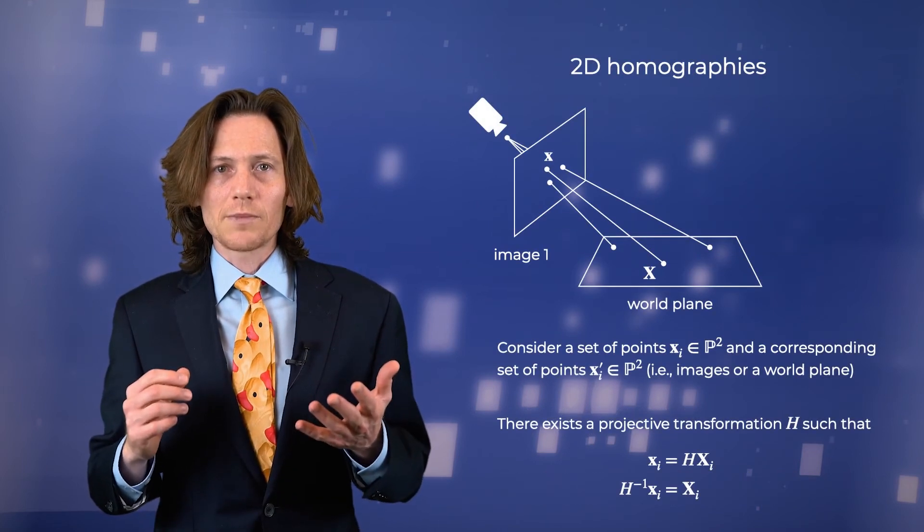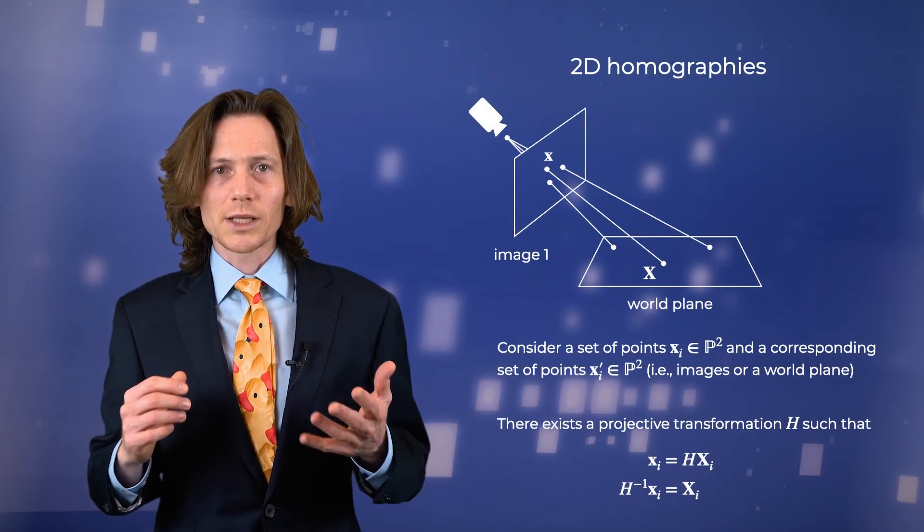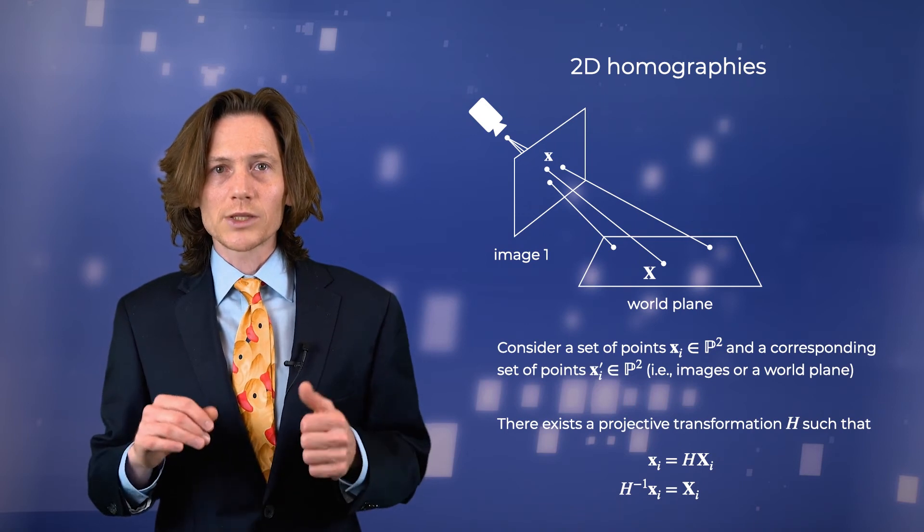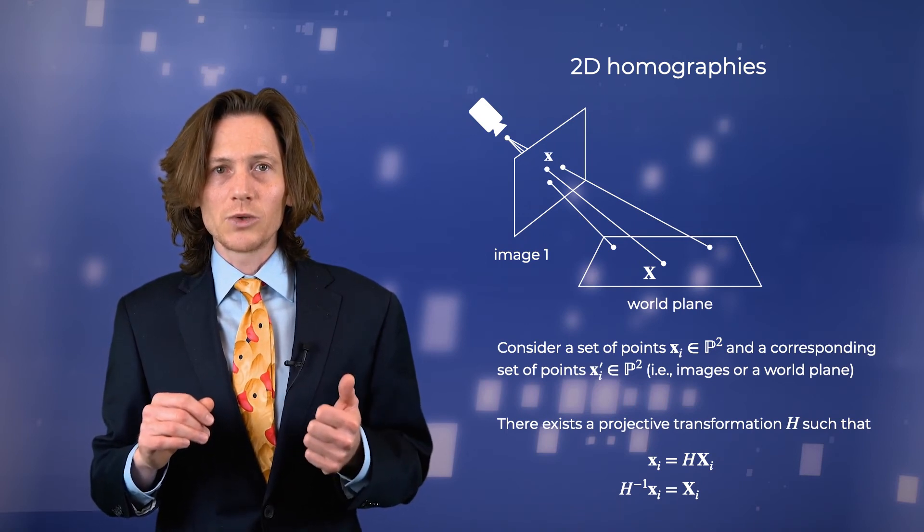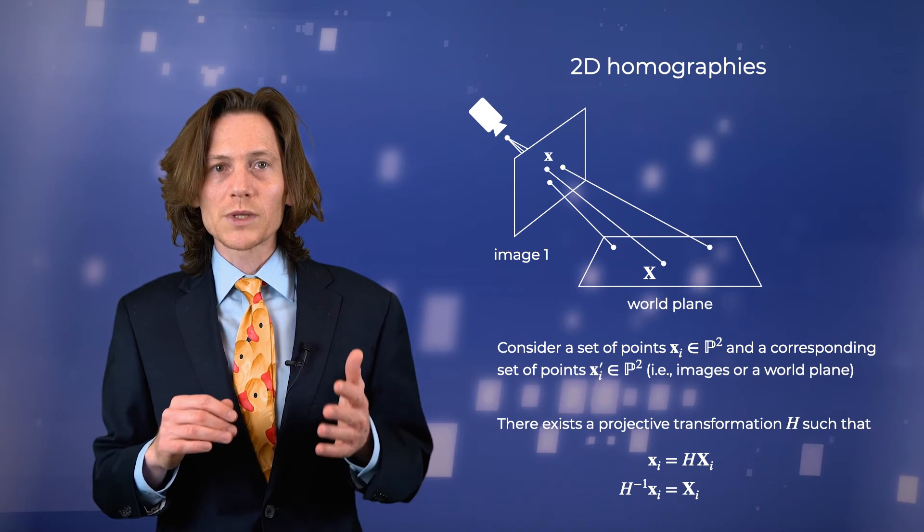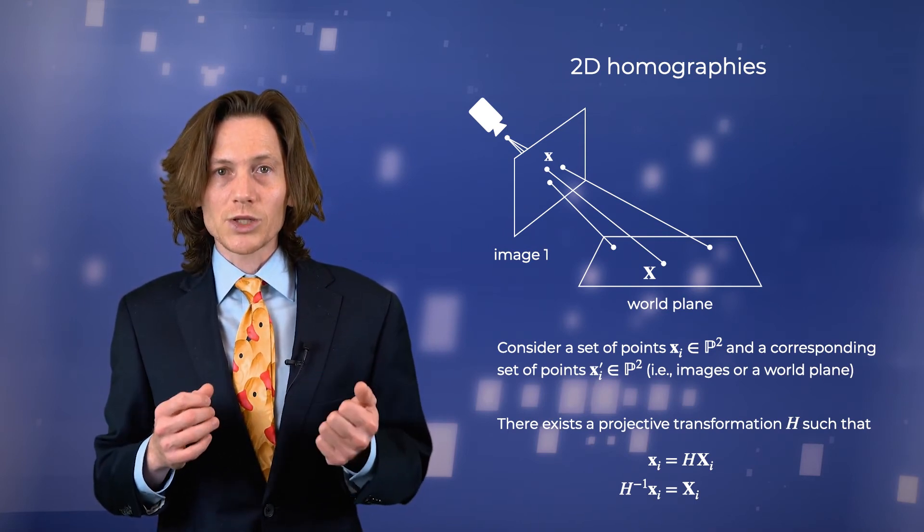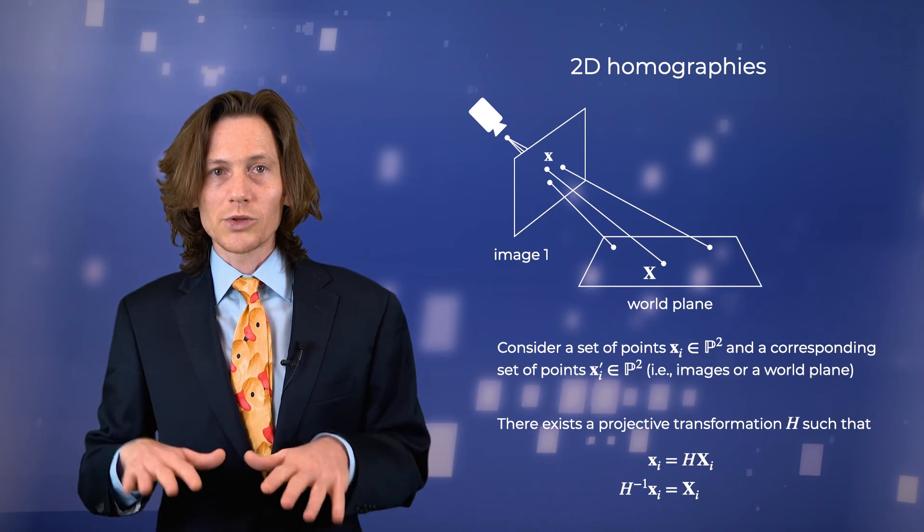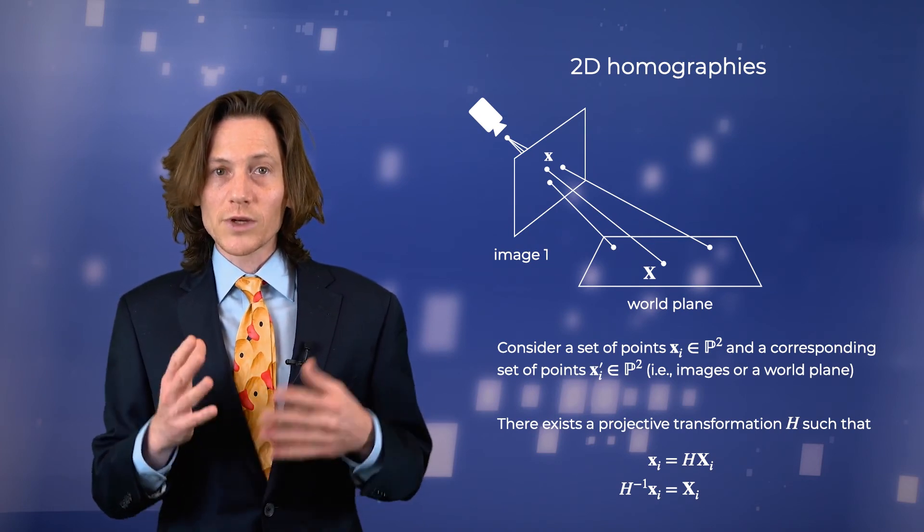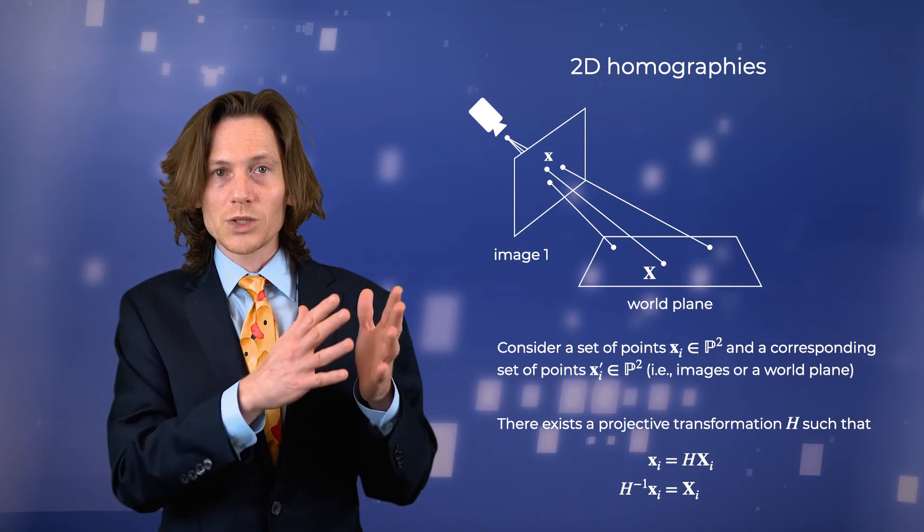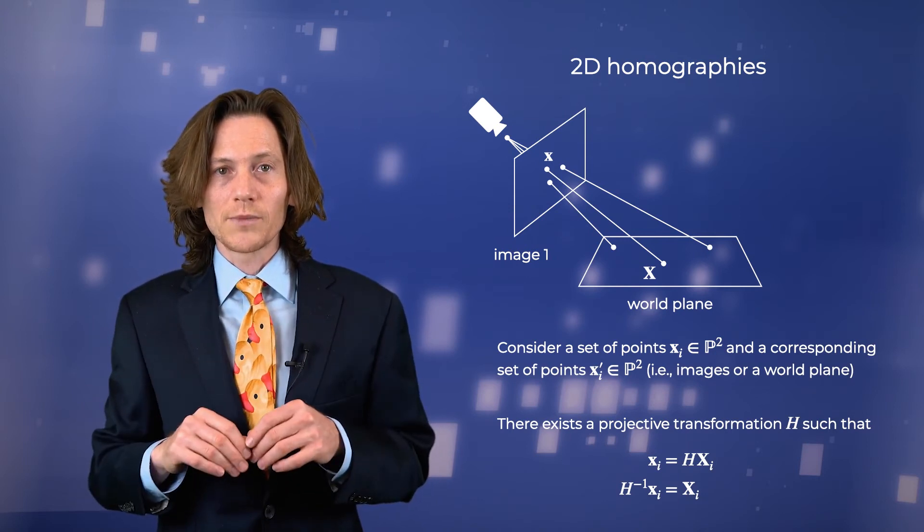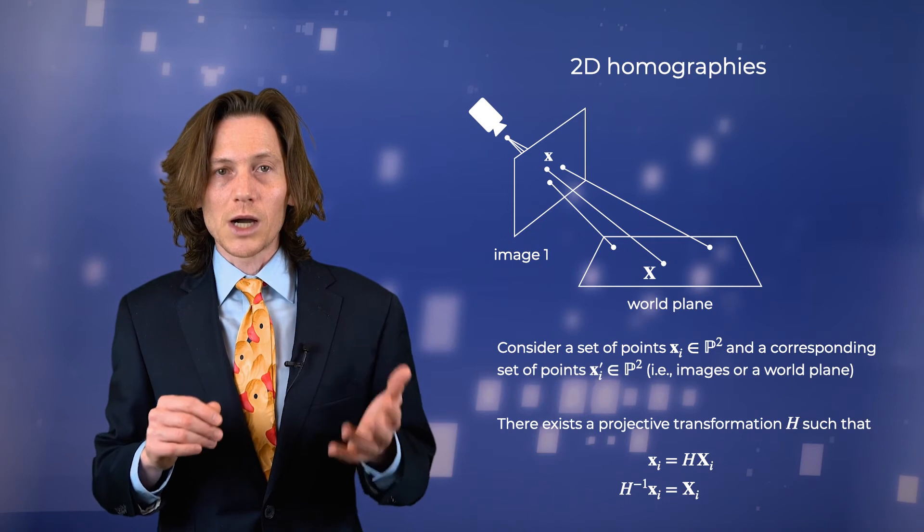In order to understand how planarity may be helpful, suppose that we have a set of points that lie on a plane in the world and that these points are imaged by a camera. As we have been doing with perspective projection, we can represent both as projective planes. There exists a 3x3 matrix H that transforms points on the world plane to their corresponding homogeneous coordinates in the image. The inverse of this matrix then maps points in the image to their associated points on the world plane. This transformation is known as a homography.